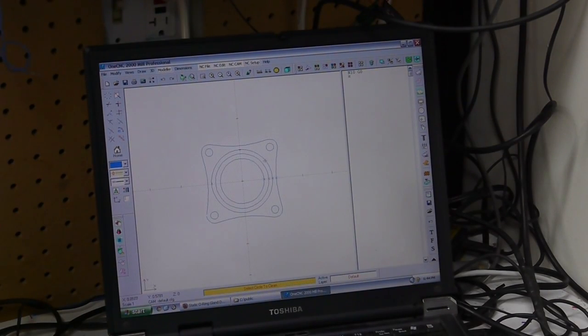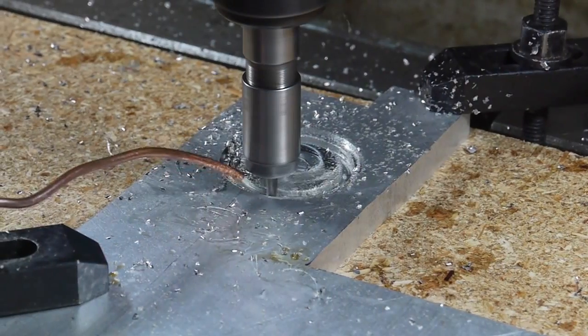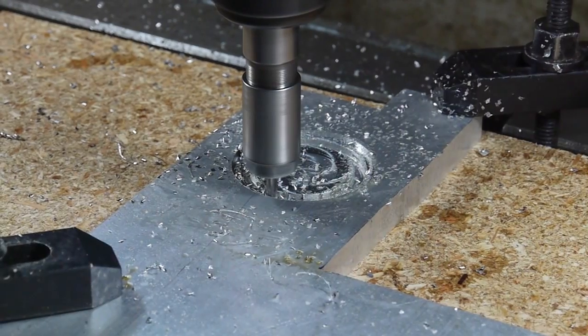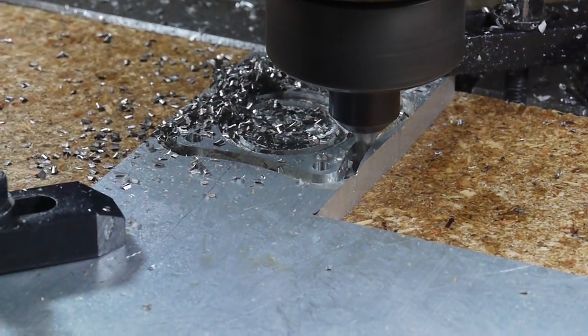I made two aluminum end plates. Drew them up in CAD first, and then used the CNC mill to cut them out. I cut an O-ring gland and a section for the tube to fit into.